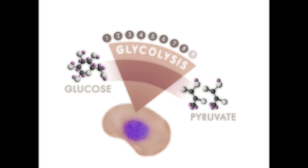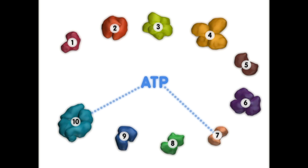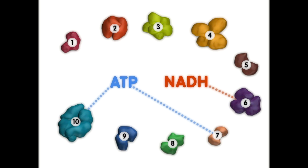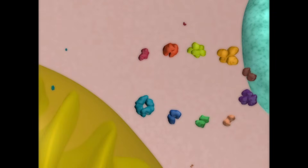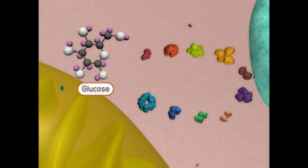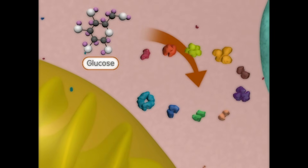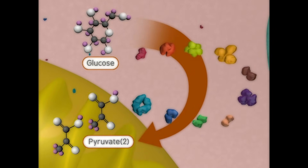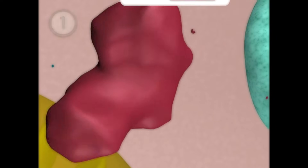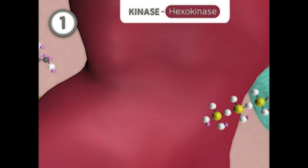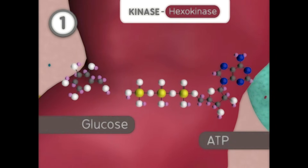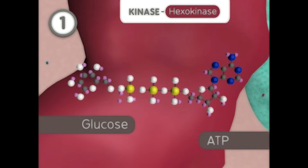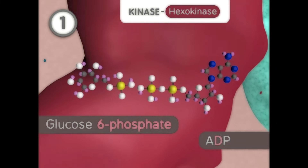This process produces ATP along with other products such as NADH that can be used later to produce even more ATP for the cell. Let's watch as these enzymes oxidize one glucose molecule into two pyruvate molecules. First, a kinase reaction adds a phosphate onto glucose to form glucose-6-phosphate. This is one of two energy consumption steps and is an irreversible reaction.